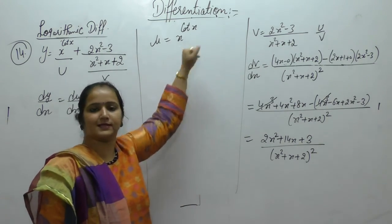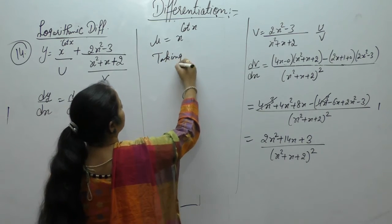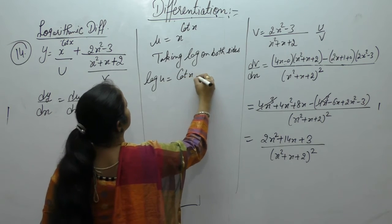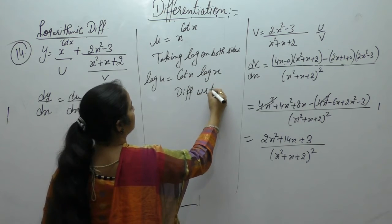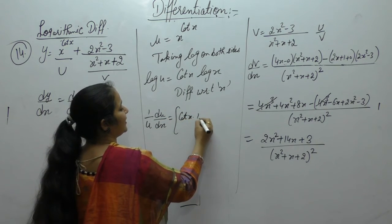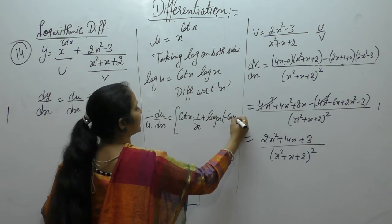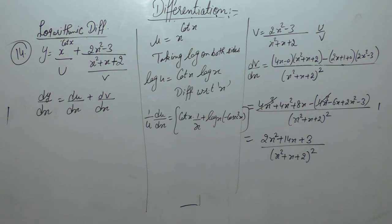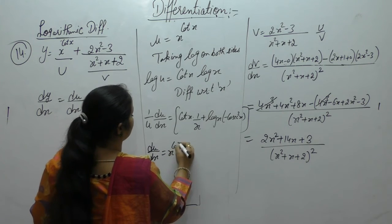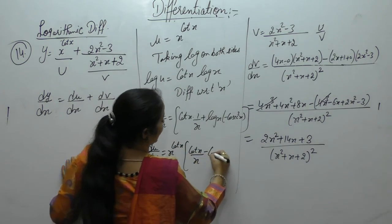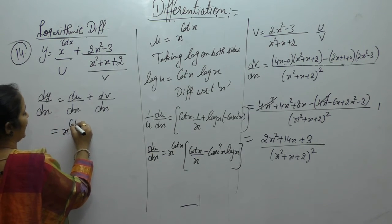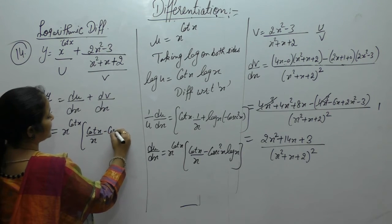Now for u = x^cot(x), there is variable power variable, so we take log on both sides. Log(u) = cot(x) · log(x). Differentiate with respect to x: 1/u · du/dx. First as it is: derivative of log x is 1/x. Plus log(x) as it is, derivative of cot x is −cosec²(x). So du/dx = x^cot(x) · [cot(x)/x − cosec²(x) · log x].